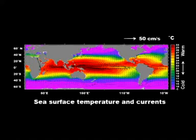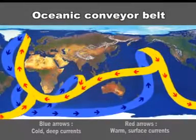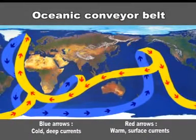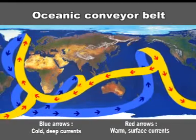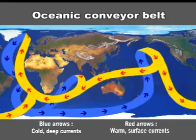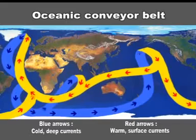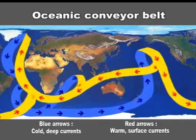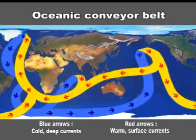On long time scales, the oceans participate in determining climate through the global conveyor belt, which is affected by changes intrinsic to the atmosphere and the ocean, and by the changes in solar heating due to variations in the Earth's orbit around the sun.